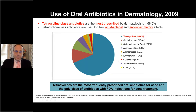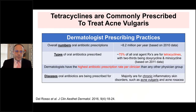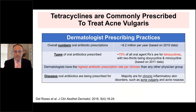Let's take a closer look at prescription habits of dermatologists. The overall number of antibiotic prescriptions dermatologists are writing is somewhere around eight or nine million per year in the United States, based on 2010 data. About 70–75% are tetracyclines, and two-thirds of those are either doxycycline or minocycline based on 2011 data. It turns out dermatologists have the highest antibiotic prescription rate per clinician of any physician group.